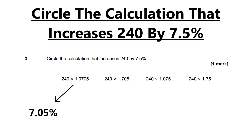Now number two — bear with me because I realise this is a slightly different technique to what you might be taught. 240 times 1.705. As I said before, the 1 is 100% effectively. The next column is the 10s, so there are 7 tens — that's 70%. We've got 0 in the single percentage column, and then 5 tenths in the last column. So it's 70.5%.